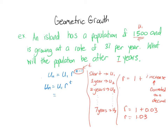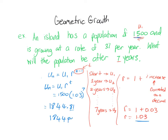So we have u1 = 1500, r = 1.03, raised to the seventh power. Working that out in the calculator, we get 1844.81. But we're dealing with people, and we can't have 0.81 of a person, so we have to round. Since the population is growing and that partial person has not yet been born, we round down. After seven years, we have 1844 people on the island.